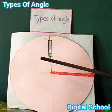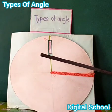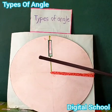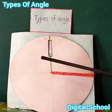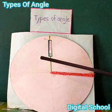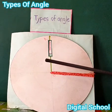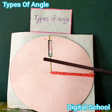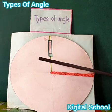Assalamu alaikum, I am Aboka. Today we will learn about types of angle. Dear friends, look at the board. This is a right angle. An angle that measures 90 degrees is called a right angle. In the figure, ABC is called a right angle. Thank you.